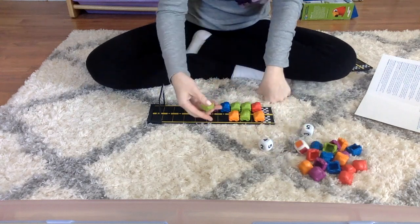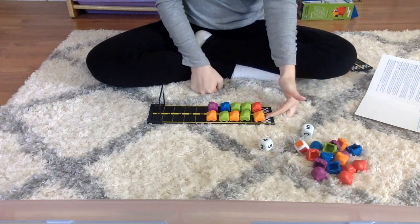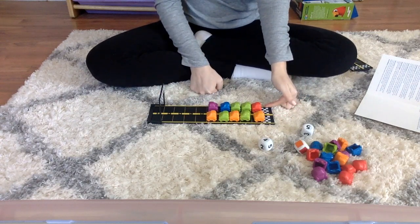If we had five on both sides, that means this side is equal to this side.